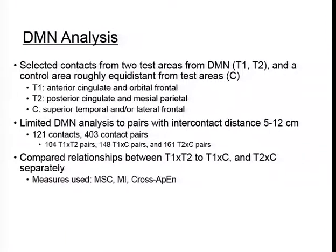We didn't want to bias our results with spurious correlations from very low intercontact distance pairs. This left us with 121 total contacts across the nine patients and 403 contact pairs: 104 T1–T2 pairs, 148 T1–C pairs, and 161 T2–C pairs. We compared relationships between T1–T2 versus T1–C and T2–C. The measures used were magnitude squared coherence, mutual information, and cross approximate entropy, a bivariate measure of asynchrony between two time series.